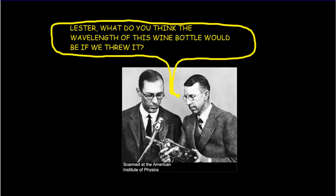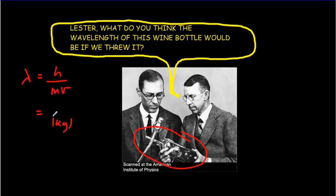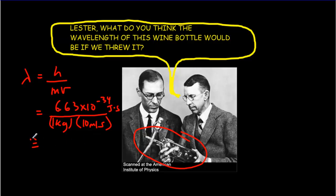What happens when we look at the de Broglie wavelength of a macroscopic object, like a baseball or a wine bottle? The wavelength is given by Planck's constant divided by momentum, which is mass times speed. Taking a mass of about 1 kilogram thrown at 10 meters per second, with Planck's constant 6.63 times 10 to the minus 34 joule-seconds, we get an answer of about 10 to the minus 35 meters. There's nothing in the universe that is that small.